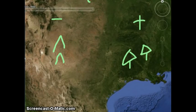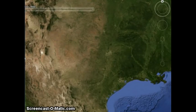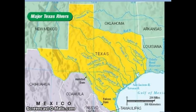Not only does this affect the vegetation, it also affects our rivers. Most of the rivers in Texas are located on the east side of the state, since this is where most of the precipitation falls.